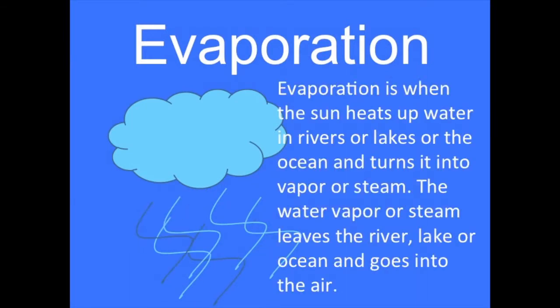Evaporation is when the sun heats up water in rivers, lakes, or in the ocean and turns it into vapour or steam. The water vapour or steam leaves the river, lake or ocean and goes into the air.